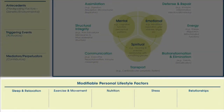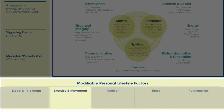Across the bottom of the matrix are the critical lifestyle factors that affect disease and are largely under control of the patient. They include sleep and relaxation, exercise and overall movement, nutrition, stress response, and social relationships.